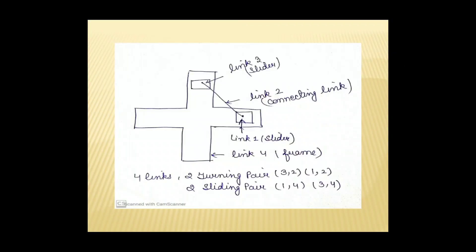Here is the diagram of double slider crank mechanism. We can see that link 1 is a slider, link 2 is the connecting link, link 3 is again a slider, and link 4 is the frame — so there are 4 links in total. There are 2 turning pairs and 2 sliding pairs. Link 3 is a slider connected to the connecting link, i.e., the crank, which turns around — this forms a turning pair.